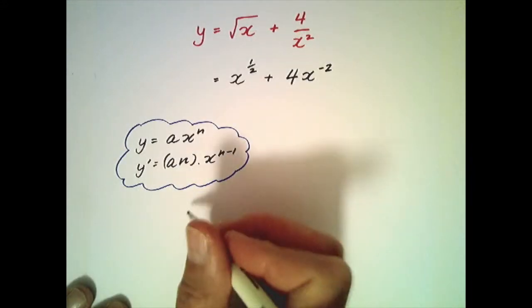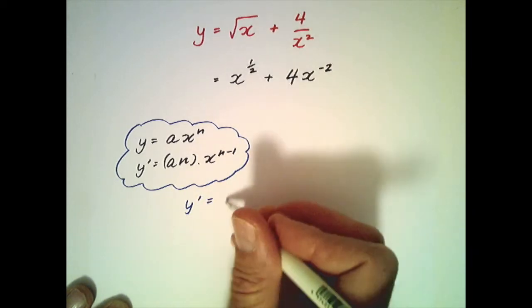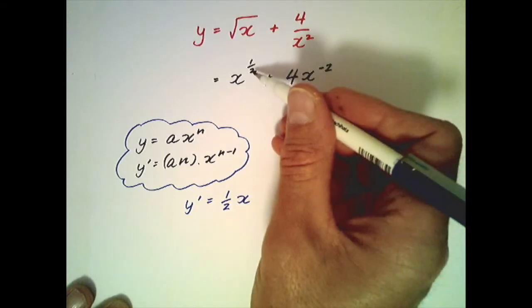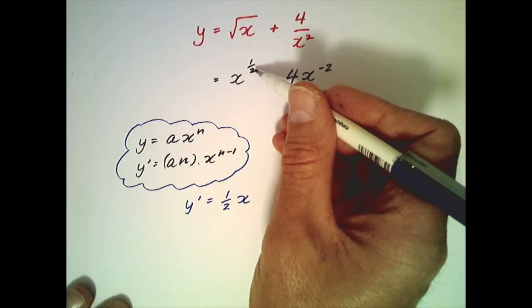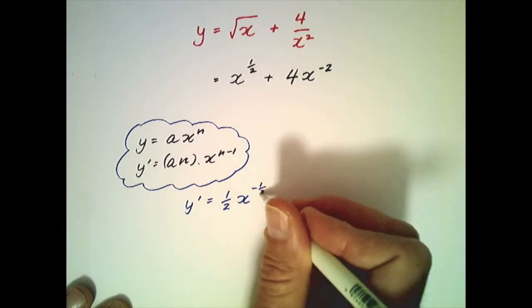So our derivative for our expression becomes such that the power of a half goes out the front of this term, we drop the power by 1. We do need to be careful when we're subtracting from fractions, but a half minus 1 is negative a half.